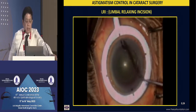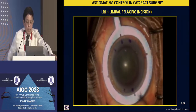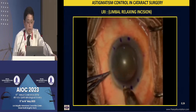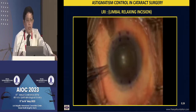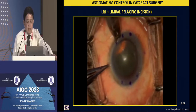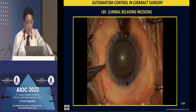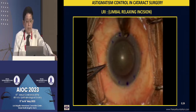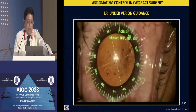Limbal relaxing incisions are very relevant and this is how they are done. The problem is they are something like radial keratotomy — you do not know how much effect they will have, on whom they will work, or how long the effect will last. For a multifocal patient with 0.5–0.75 diopters of astigmatism, with a guarded diamond knife over 600 microns you can do a limbal relaxing incision. However, the impact depends on corneal hysteresis, not just the size of the incision, so you cannot be very sure of the outcome.